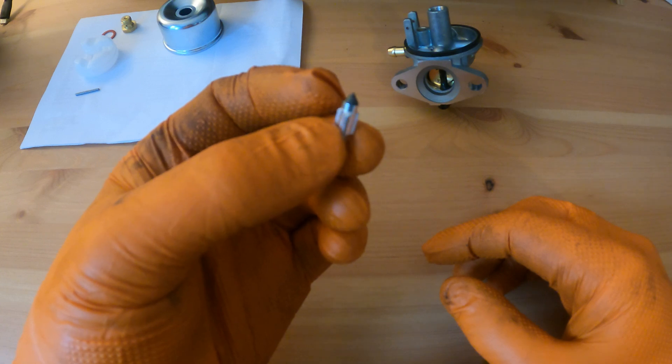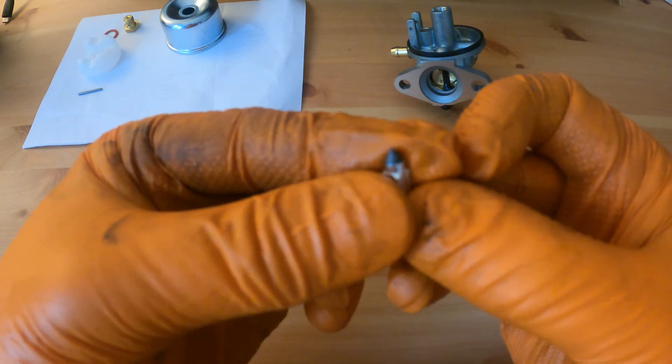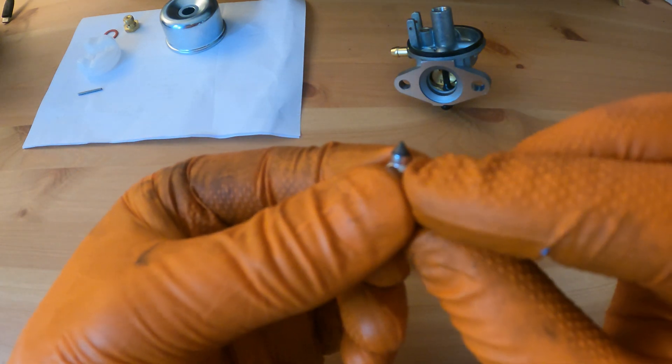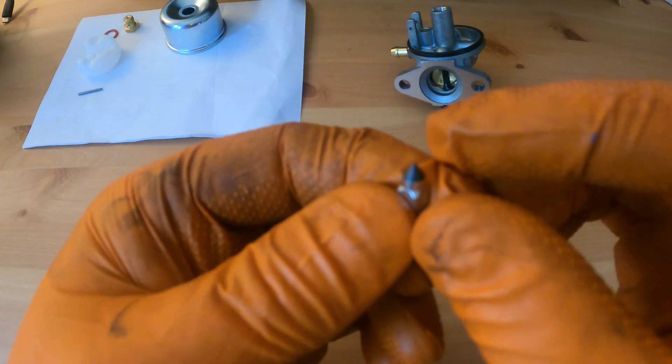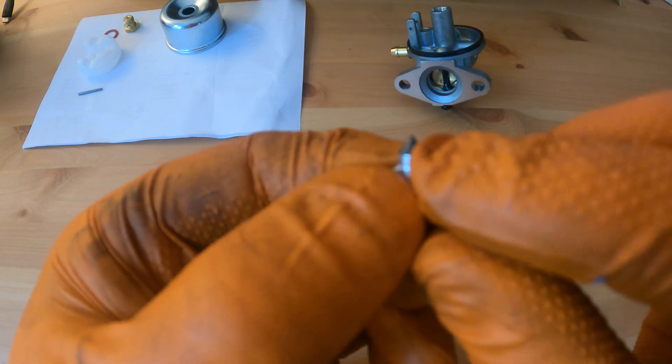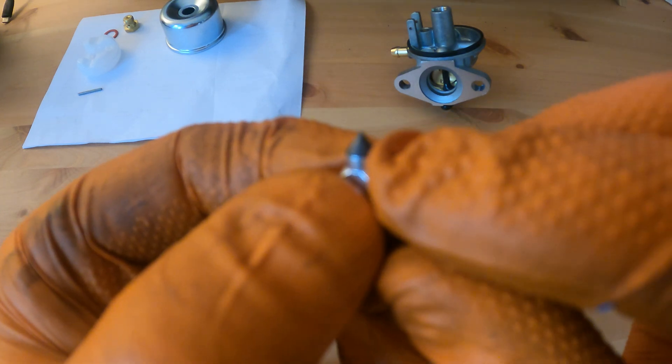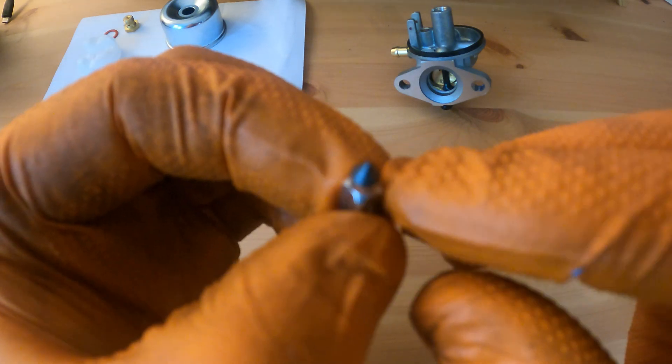We'll look at the needle now, the inlet needle for the float body. What we're looking for is on the tip of the needle, it's rubberized to the shoulder. We're looking to make sure that there's still a point on the end, that it hasn't worn or rounded, and that there's rubber all the way around with no exposed metal in the rubber section. This one's perfect.